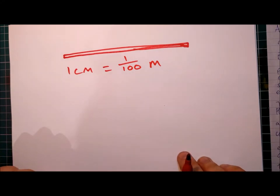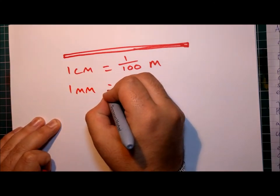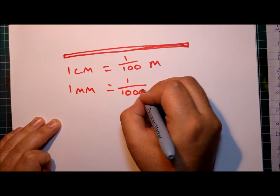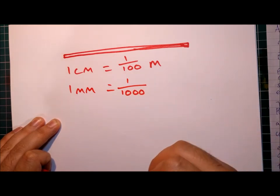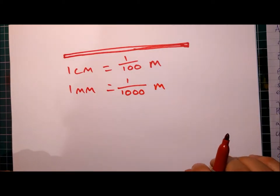But an atom is much smaller than that. If we take it down to millimeters, well, one millimeter is one over a thousand. So it's one thousandth of a meter. But atoms are way smaller even than that.